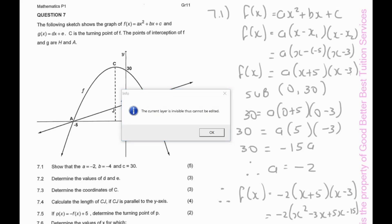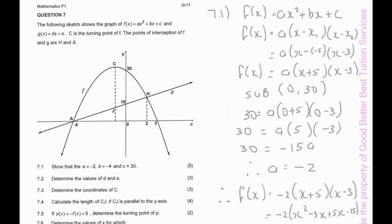Now we look for another point on the parabola. We use the y-intercept, which is (0, 30). Substituting: 30 = a(0 + 5)(0 − 3), which gives 30 = a(5)(−3) = −15a. Solving for a, we get a = −2.